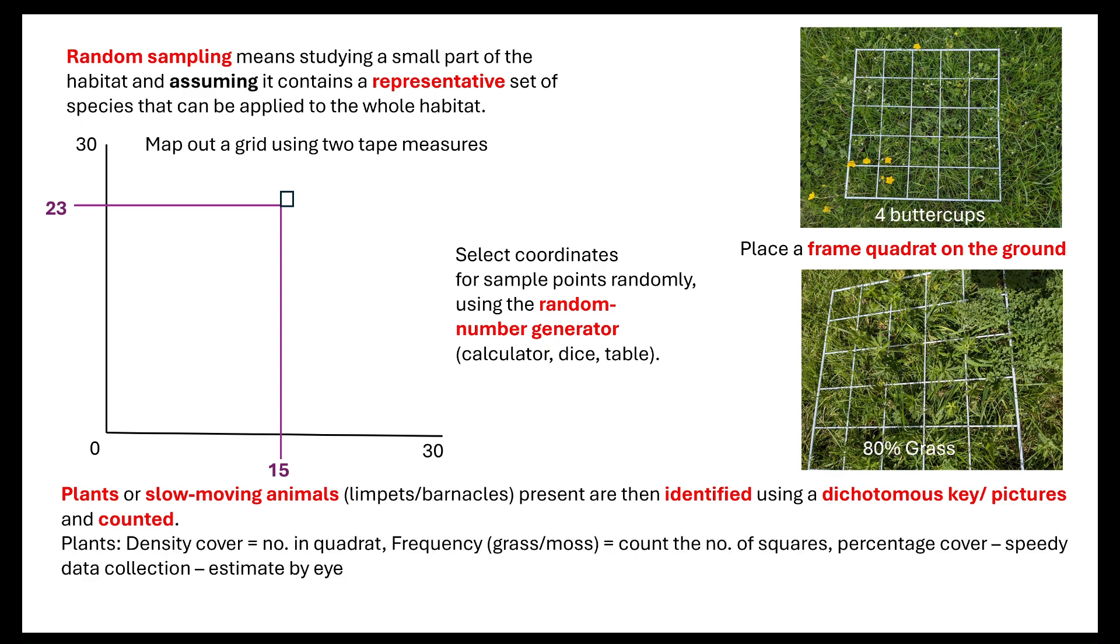When we look at plants there are different ways that we can record how many there are. It could be the density, the number that are found within that quadrat. It could be the frequency, so if we're looking at grass or moss, you want to count the number of squares where that species is present. Or you might look at percentage coverage. The reason we do that is it gives us a speedy data collection so we can estimate by eye what it is that we're observing.